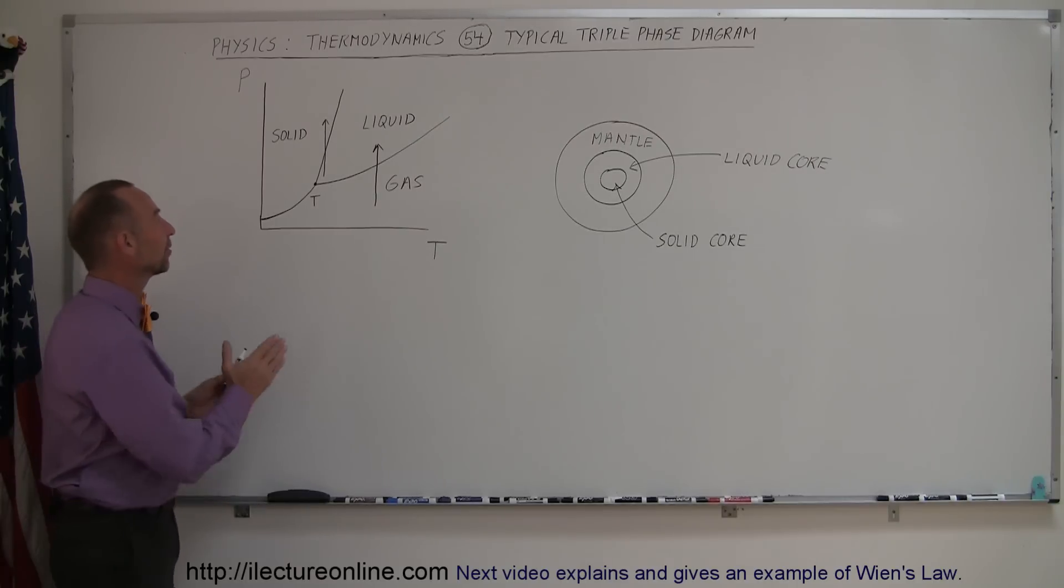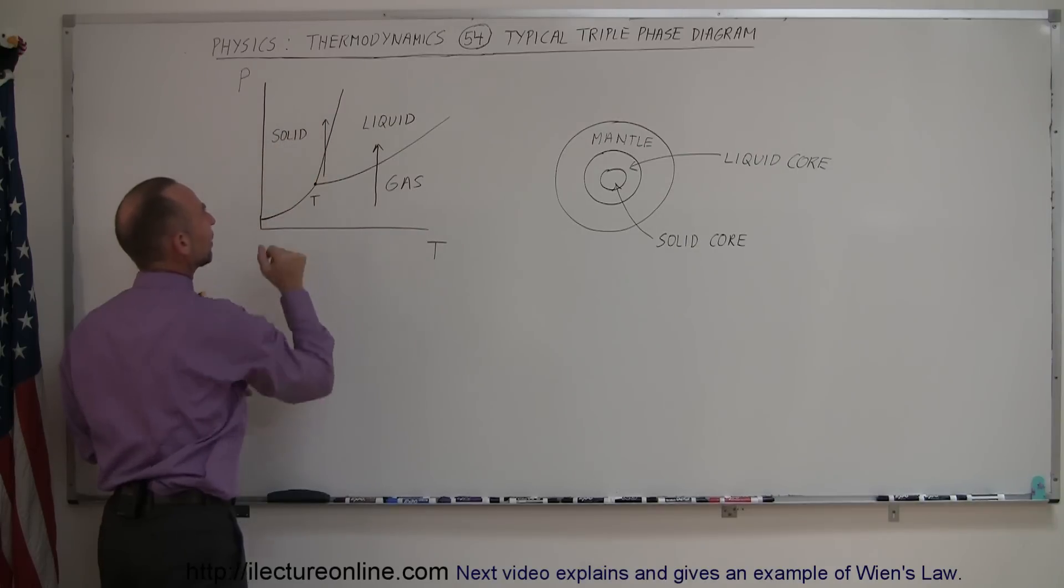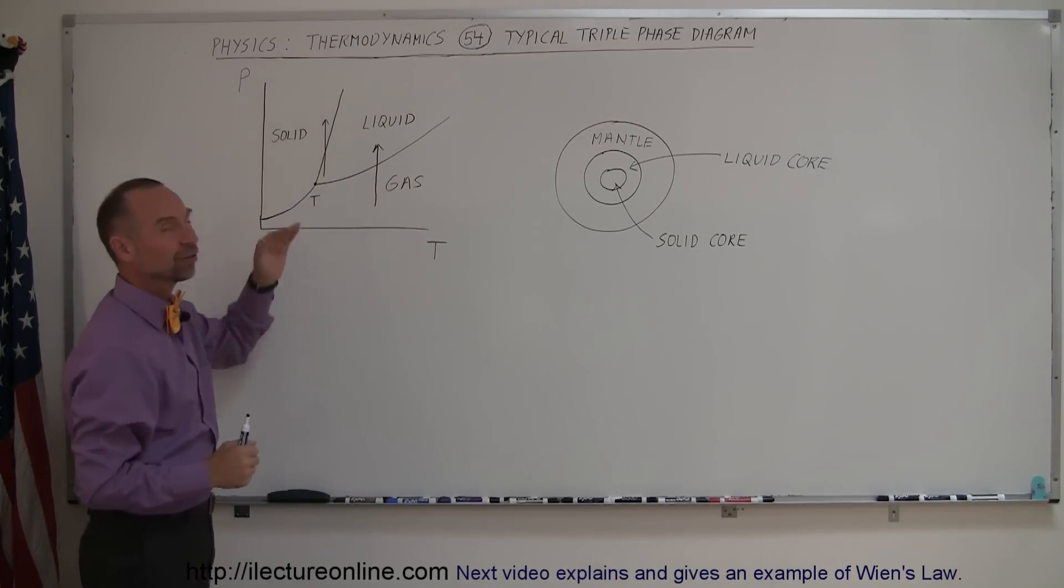And the big difference here is this line right here from the triple point upward. The line between the solid phase and the liquid phases of a substance here has a positive slope.